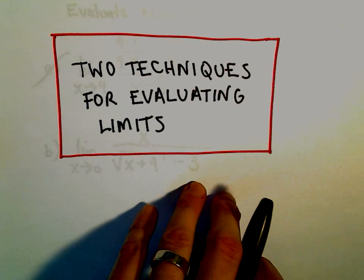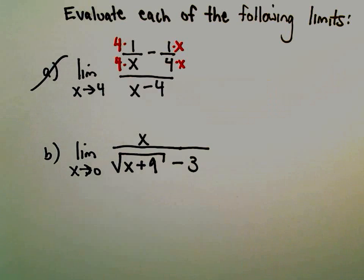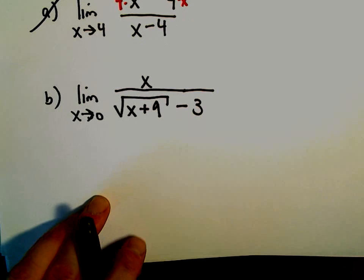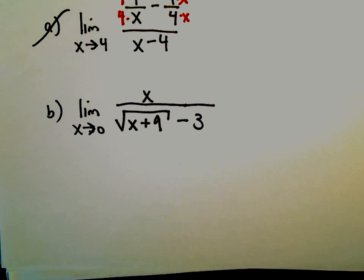Okay, so another very common technique here for evaluating limits. So part b, we've got the limit as x approaches 0 of x over the square root of x plus 9 minus 3.